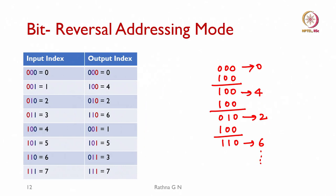Coming to why we need bit-reversal addressing: if the input index is in normal order, the output must come in bit-reversed order — or conversely, if the input is in bit-reversed order, the output will be in normal order. Doing this in software takes multiple clock cycles, so we ask: can we implement the bit-reversal in hardware?